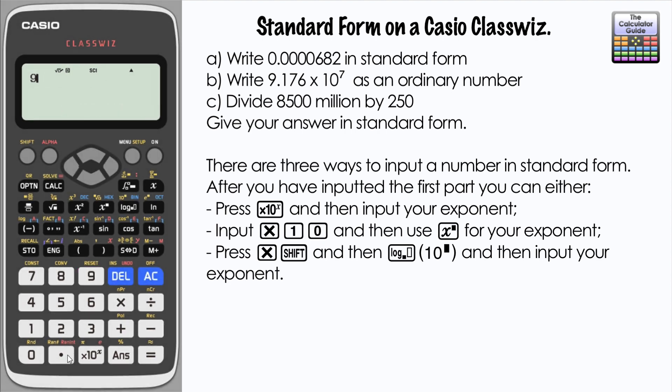There's three ways we can enter this. 9.176 and then you can press the button down here, times 10 to the X, which should give you a very small times 10 on there. Then you just need to input the exponent which in this case is 7, so you just press 7 and then equals.